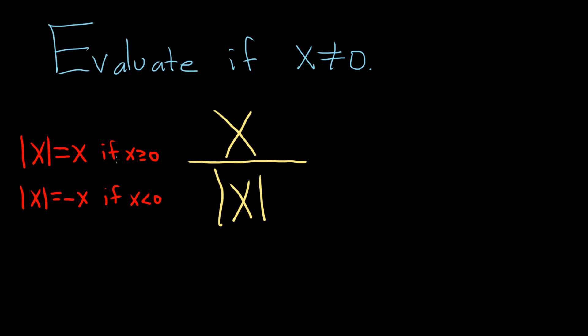So in this problem we just have to do each one of these individually. Let's do the top piece first. If x is greater than or equal to 0, we have x over the absolute value of x, and that's equal to—